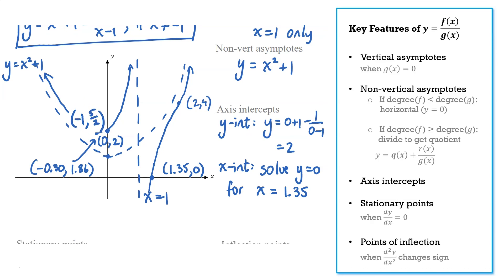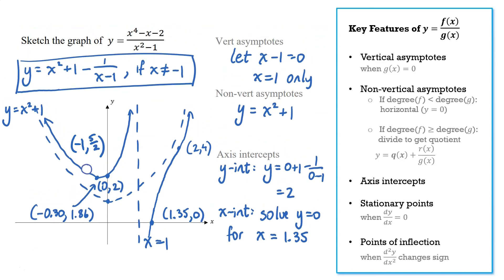Just to review, the first thing we did was that long division to express our function in quotient remainder form. Not only can we then see the non-vertical asymptote at x squared plus 1, but we also found that we had a hole in our function when x was negative 1, and it made it easier to find the vertical asymptote and the stationary points. Hope you found that video useful. Enjoy sketching your own rational functions.